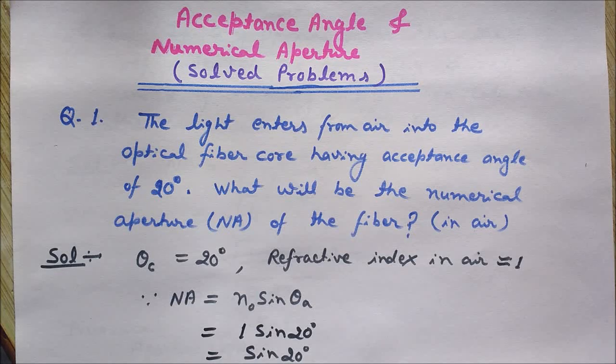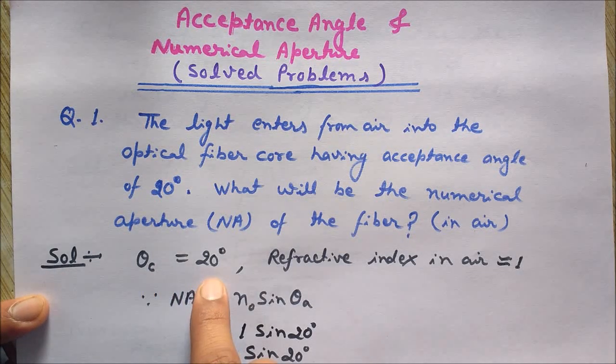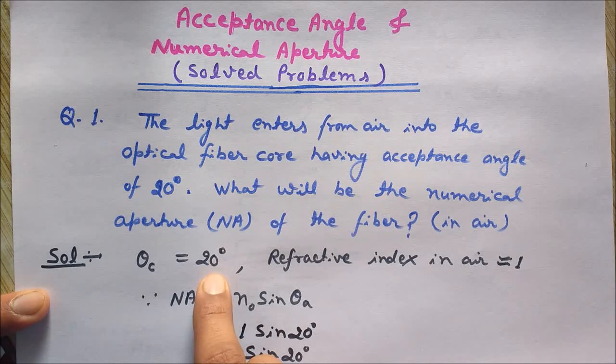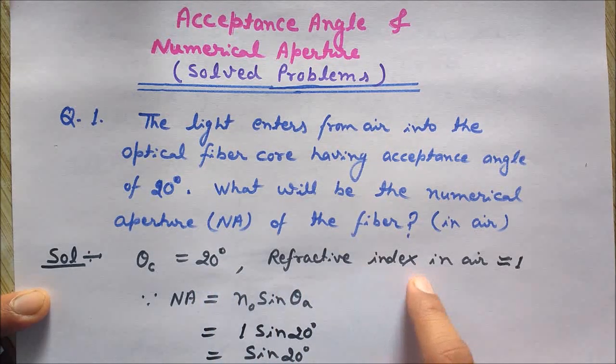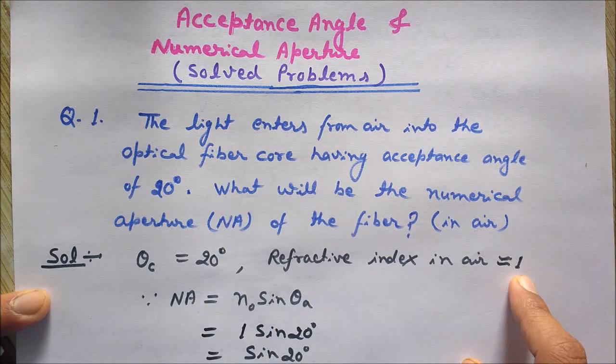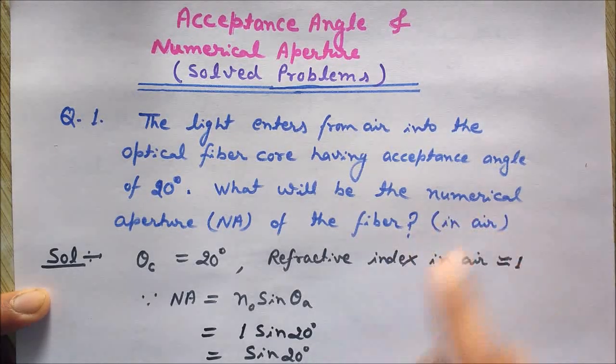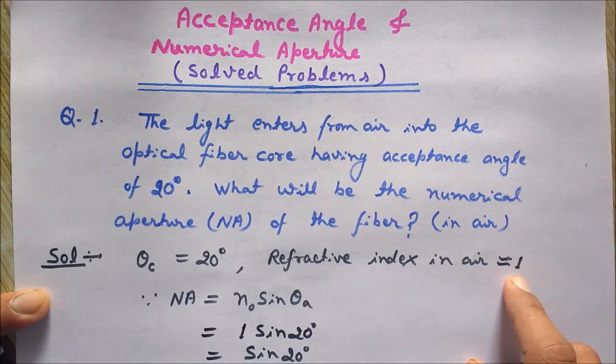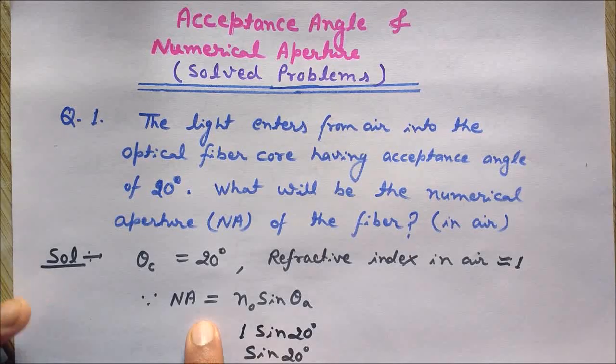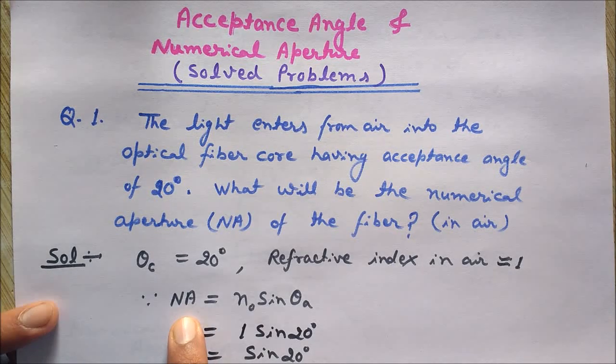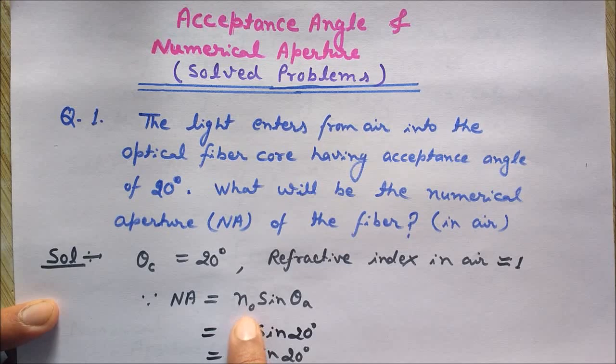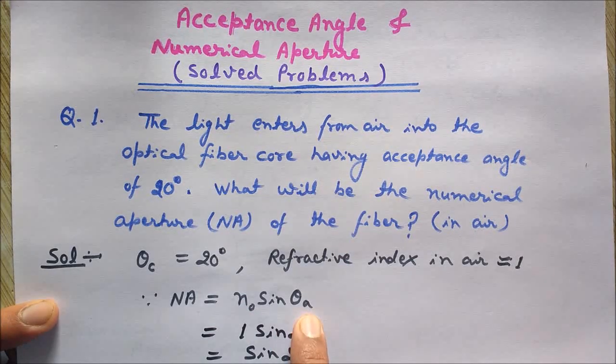Since the acceptance angle is given as 20 degrees and the refractive index in air we know is one, since this is an air so it is one for air. And the formula to find the numerical aperture is given by n naught sine theta of acceptance angle.